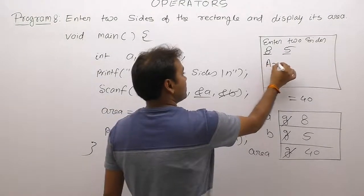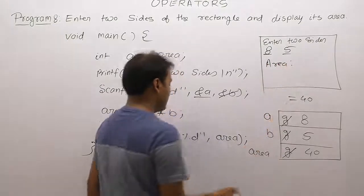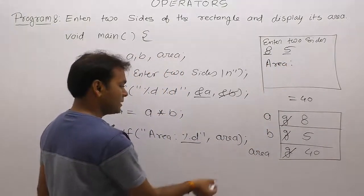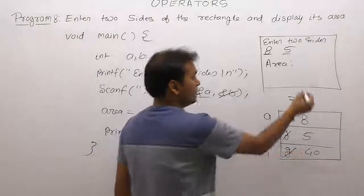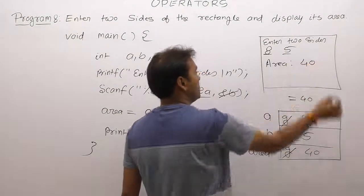Percent d percent d replace the value of area now area is 40 therefore 40 is got printed here.